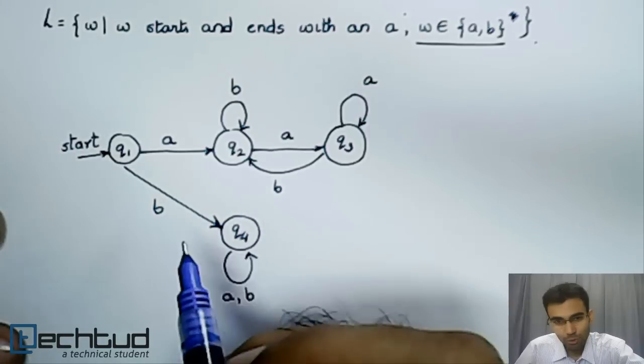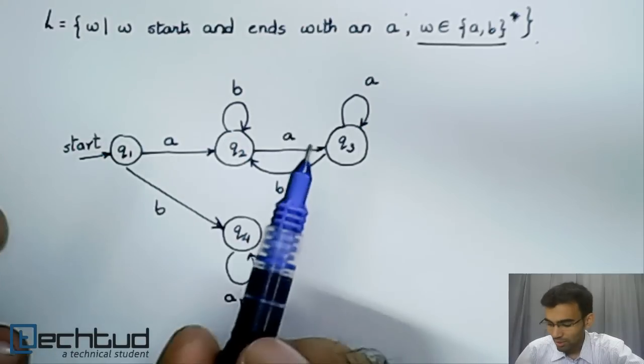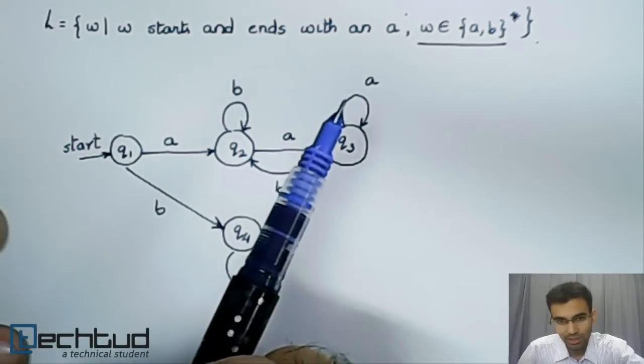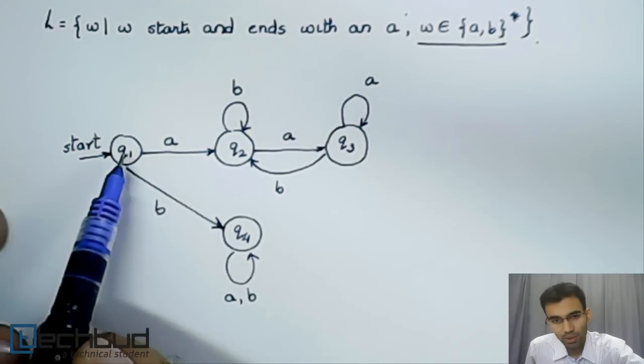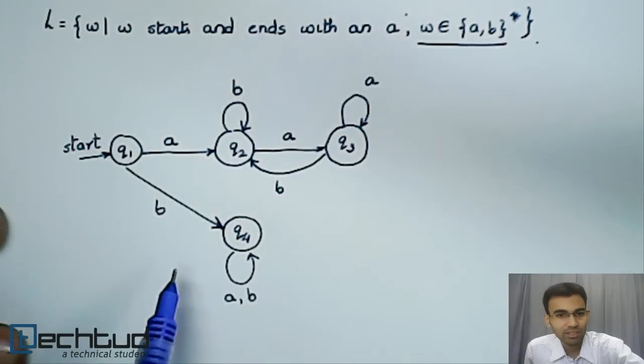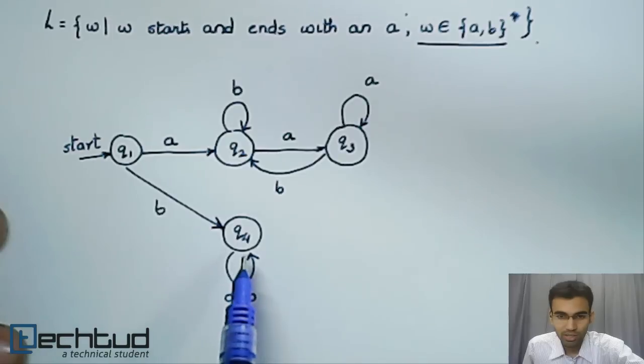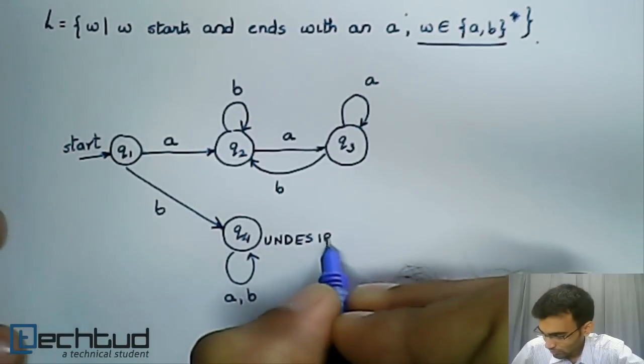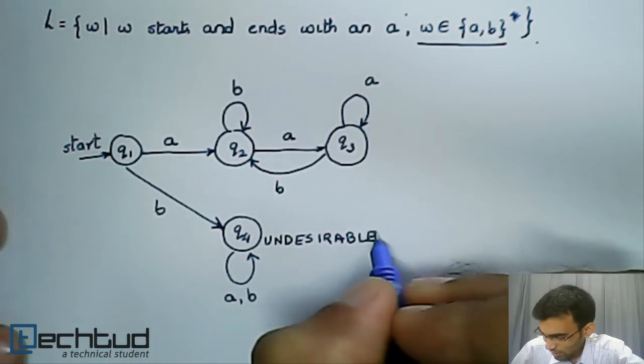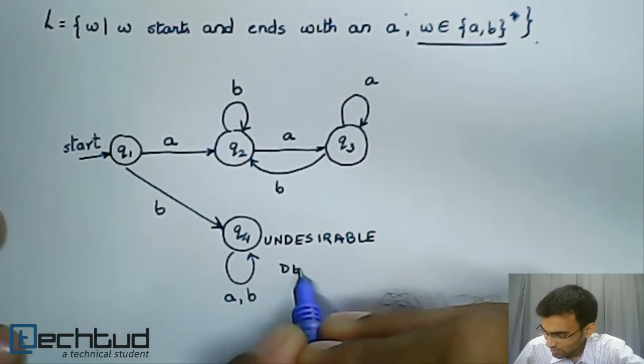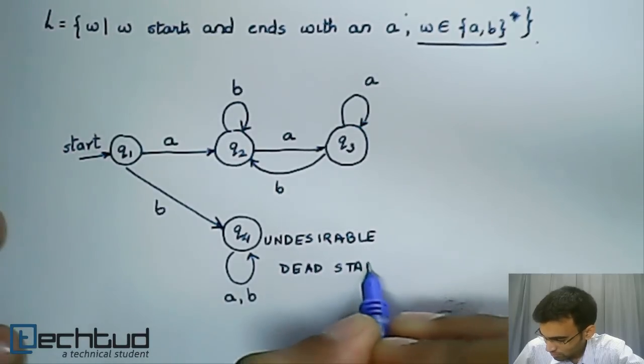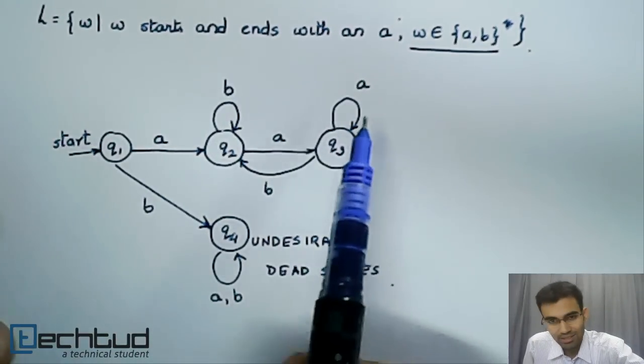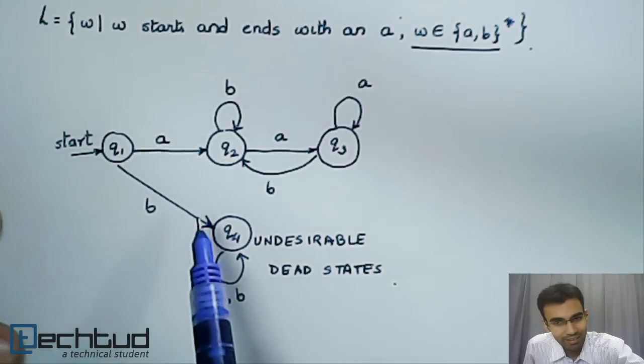And we have to decide which is the state that is most desirable. In this case, the desirable state is one in which the word has started and ended with an A. For instance, if we start in Q1 and the first letter we get is a B, then that is not desirable. So we go to a state Q4 in which we just loop on A and B and stay in Q4. So this is the undesirable state.